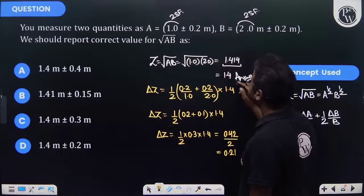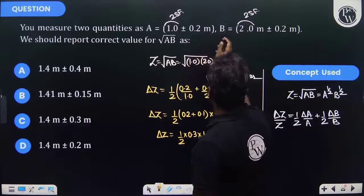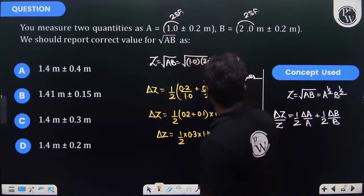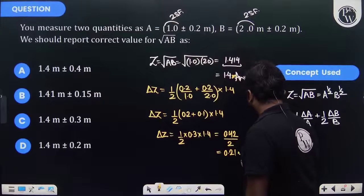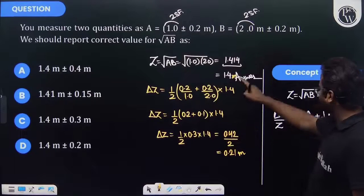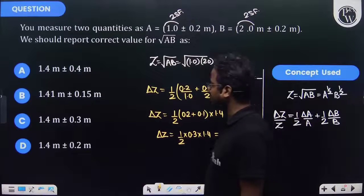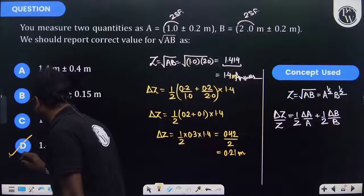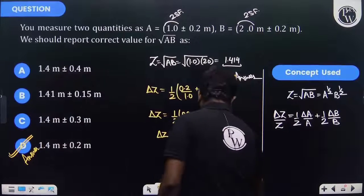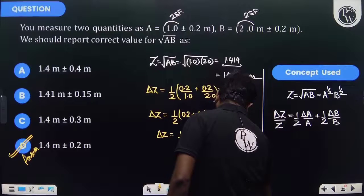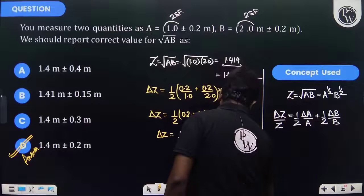The units are meters (since √(m²) = m). So 1.4 ± 0.2 meters is the correct answer. Option D is the right answer. We have to retain up to one decimal place.